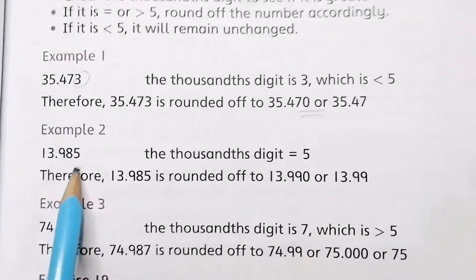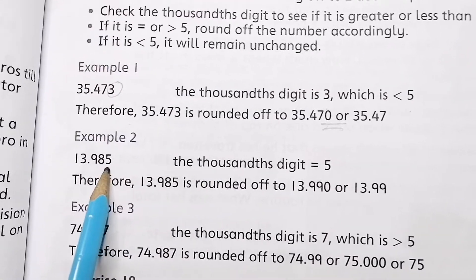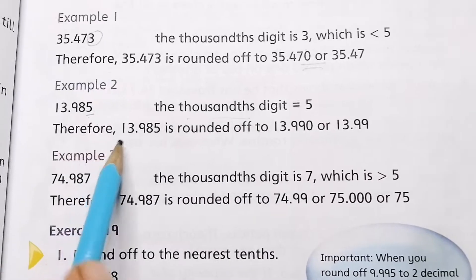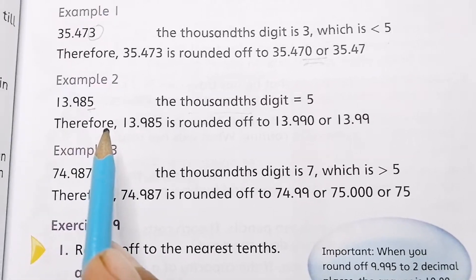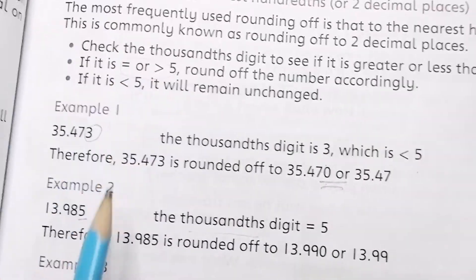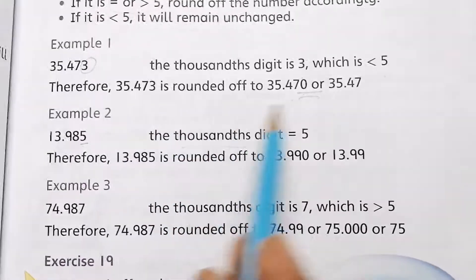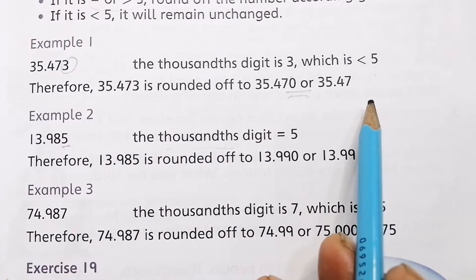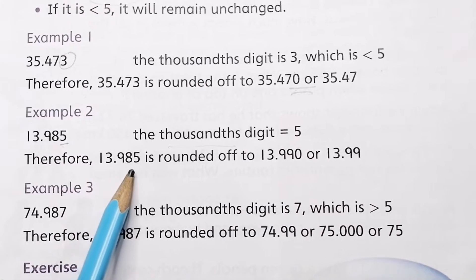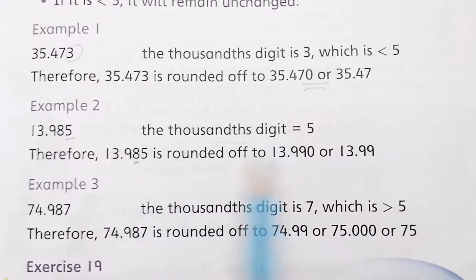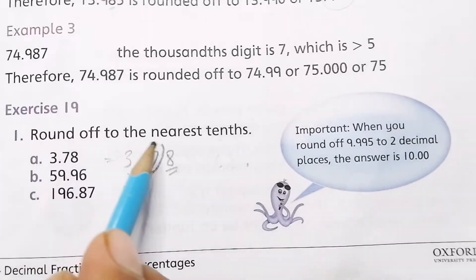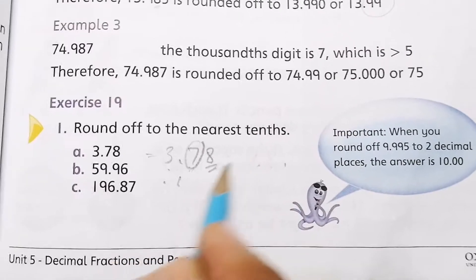Next, 13.985 is given. You look at the thousandth place — the digit is 5. Since 5 is equal to or greater than 5, you round up. The 8 at the hundredth place changes to 9, giving 13.99. Moving to Exercise 19, the question asks to round off to the nearest tenth place.